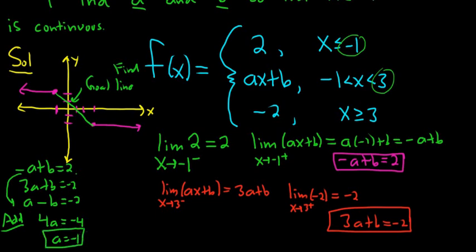Now that we have a, we can plug it back in to find b. I'll plug it back into this one here. So that will give us negative negative 1 plus b equals 2. So 1 plus b equals 2. So b is equal to 1. And that would be the value of a and b.